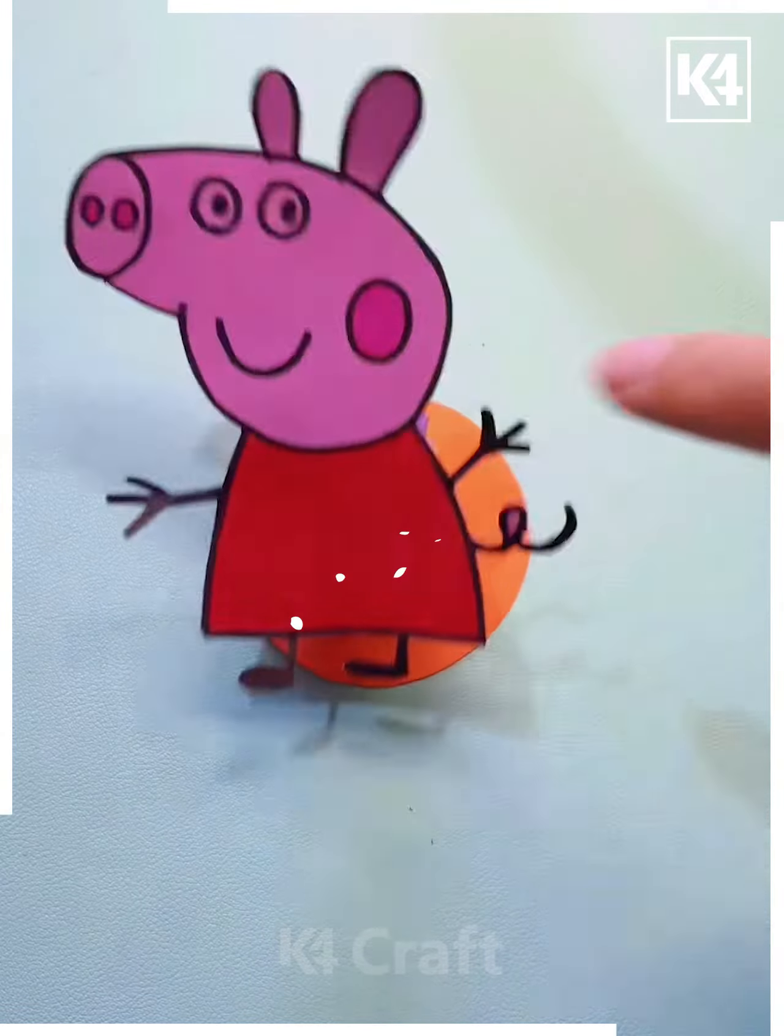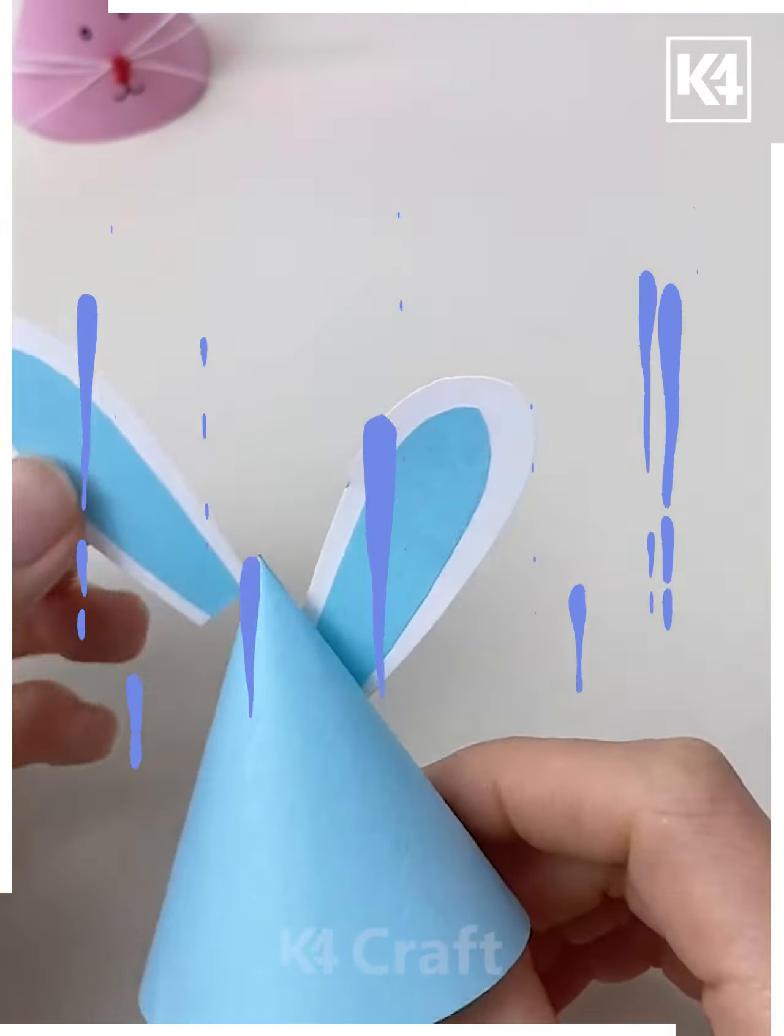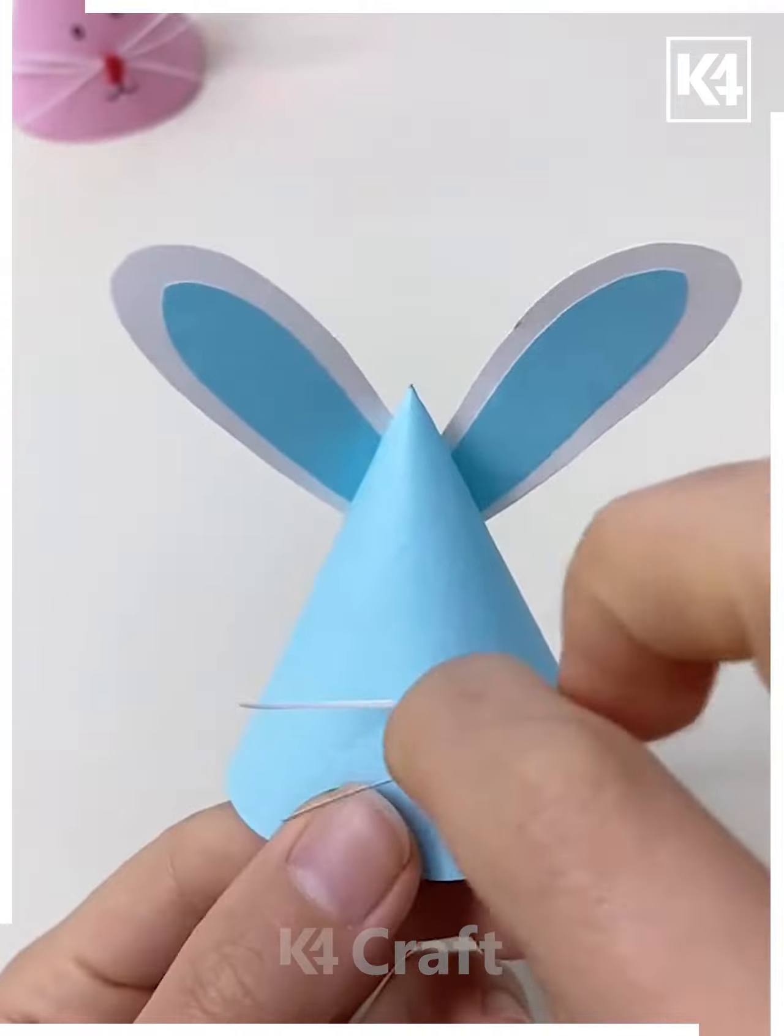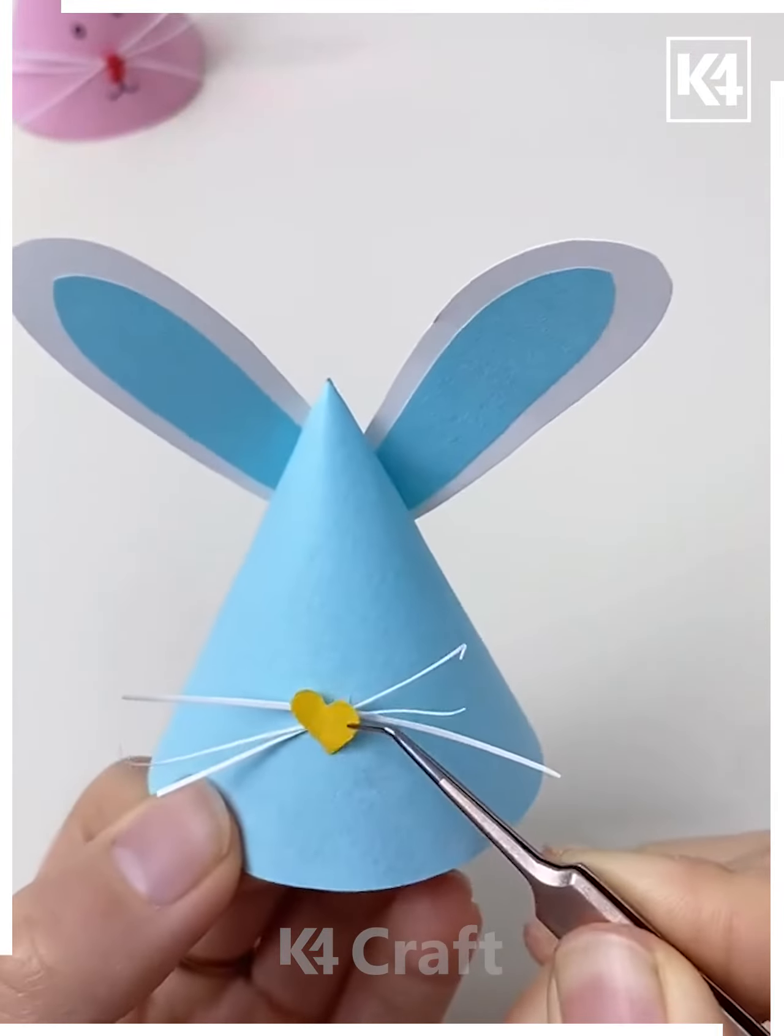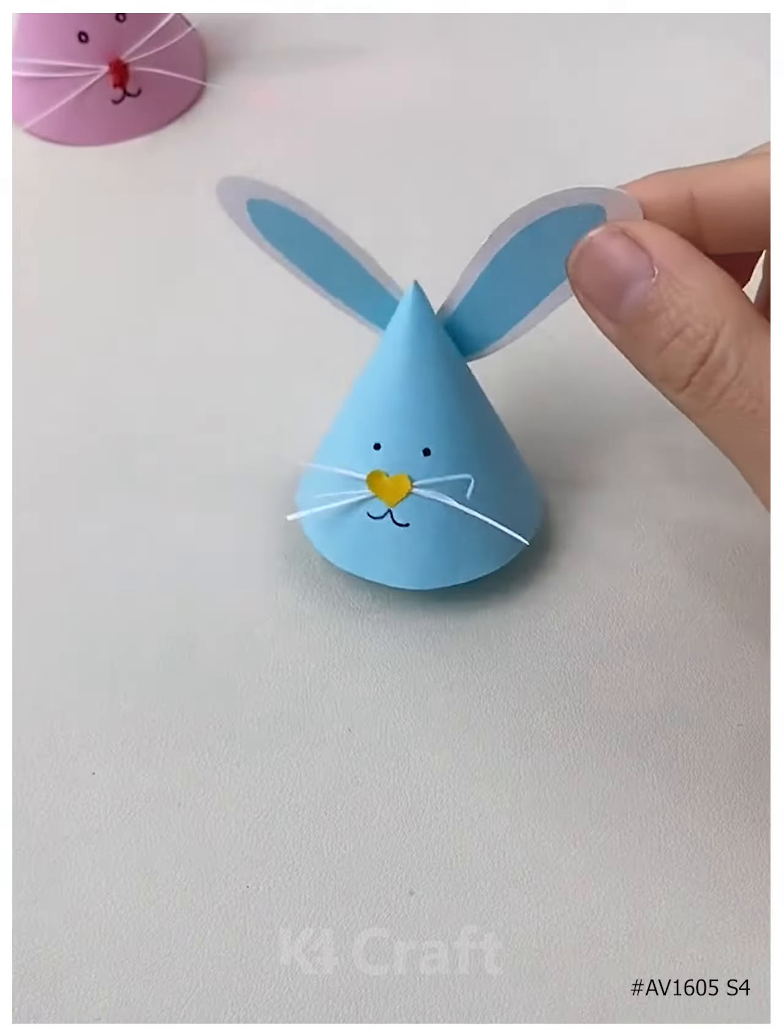Now here you have to get the conical shape formed in this manner. Get the ears pasted and then the mouth part, you have to get them attached in this form. And this is gonna look amazing. Make these tiny eyes and this is yet ready to go.